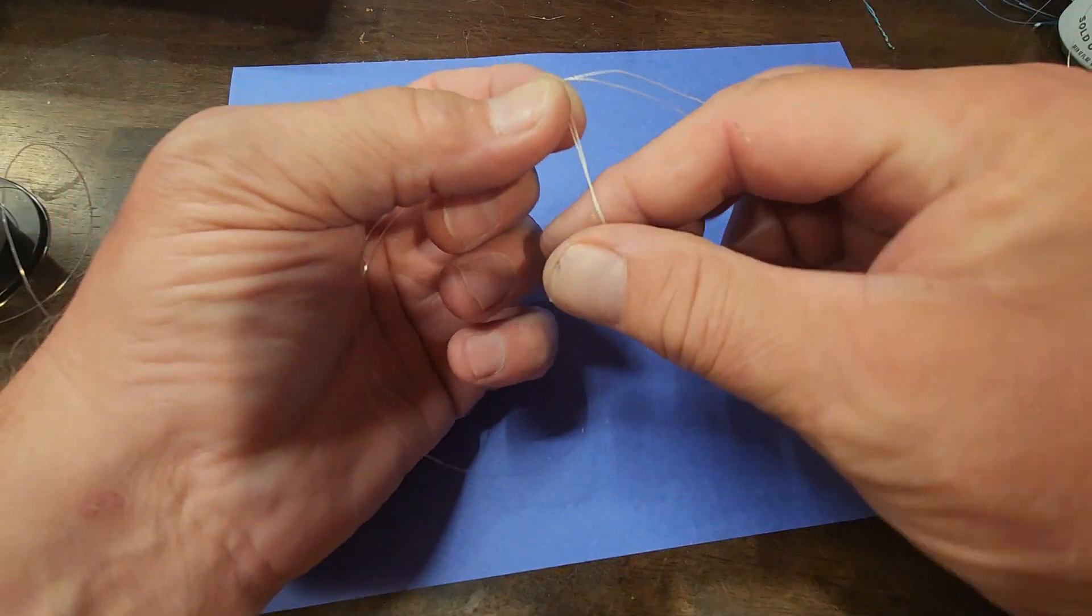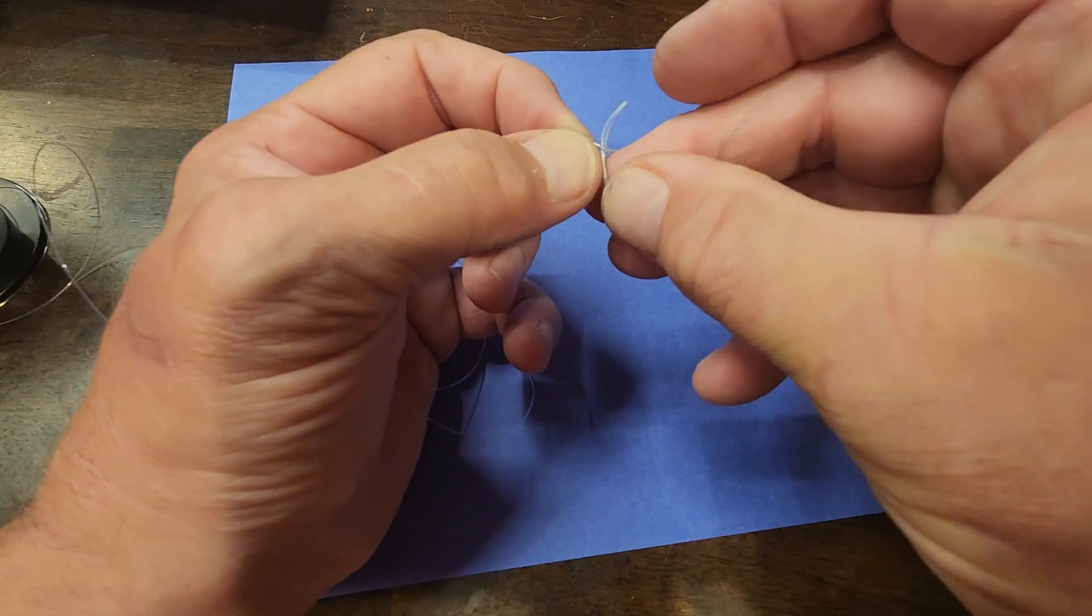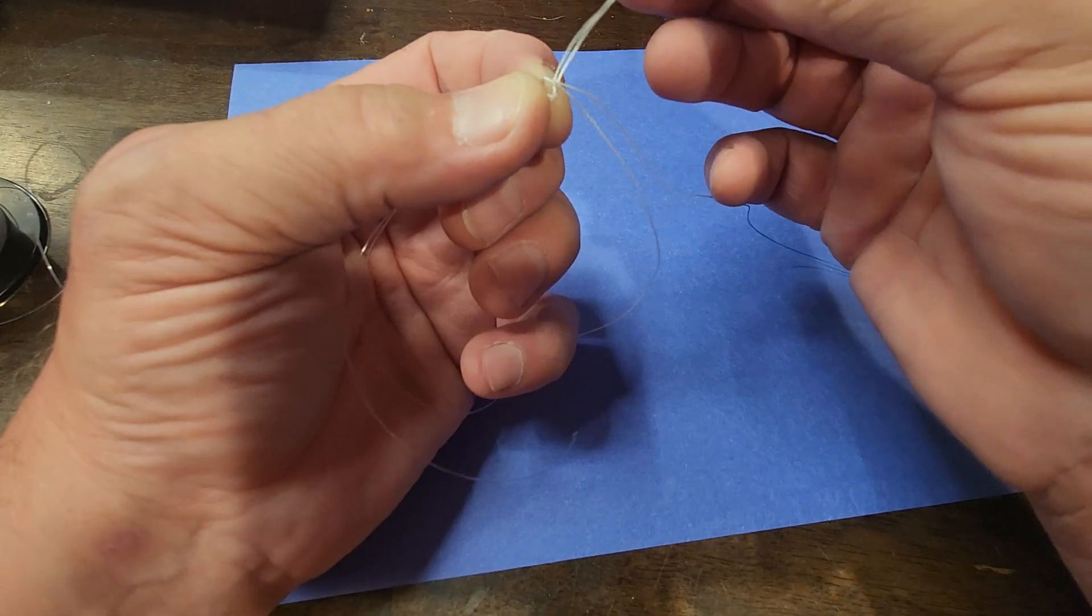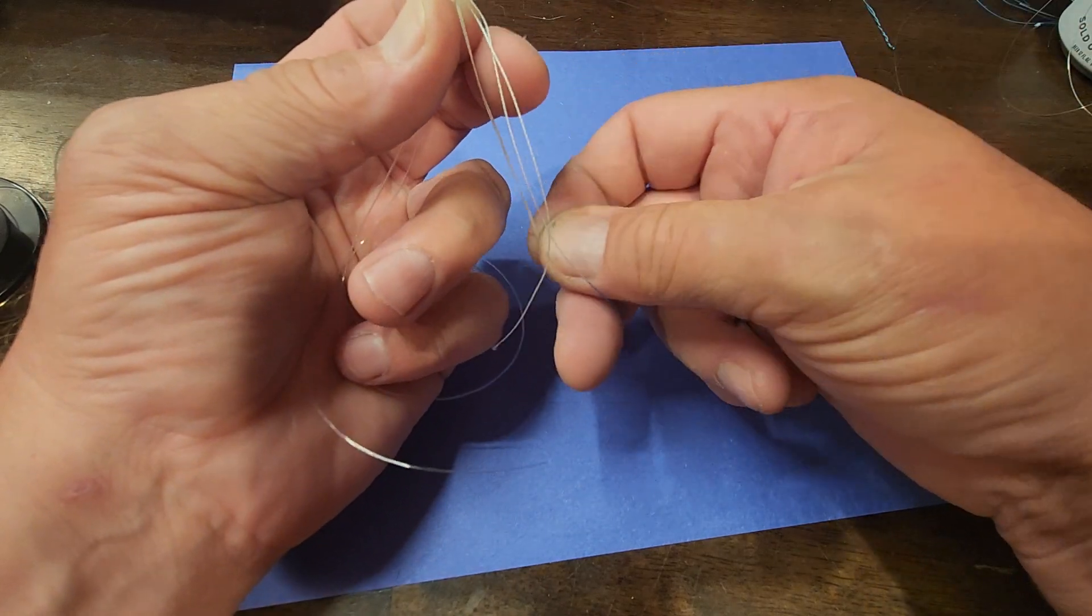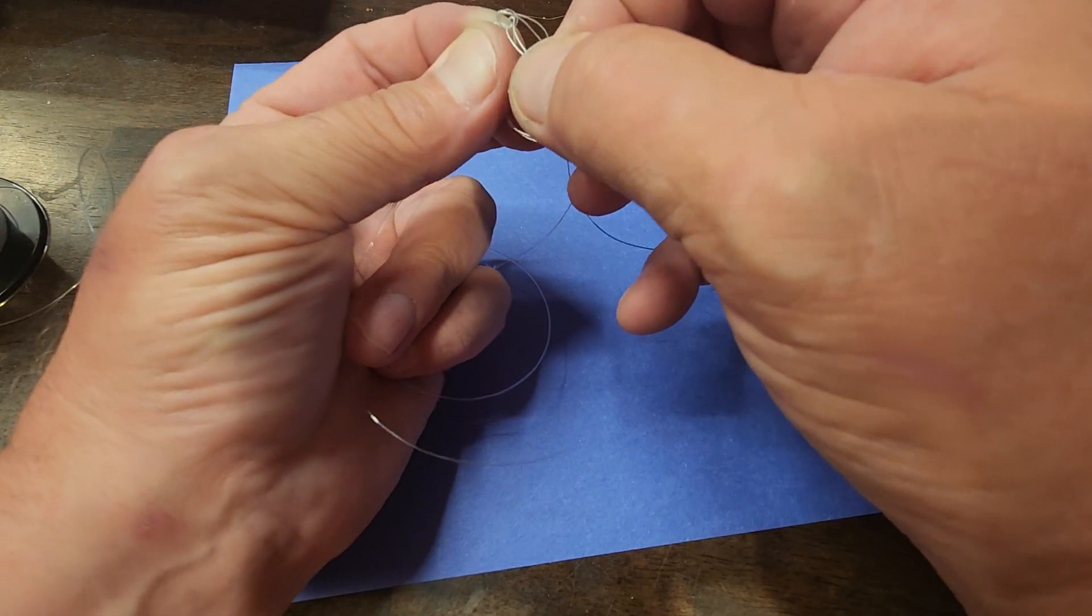I'm going to go back out the nylon the same way I went through the nylon monofilament. And one thing I like to do is I like to do a double wrap at the end. I find it doesn't come untied as much.